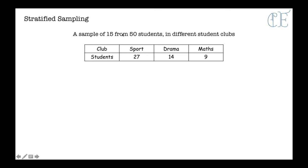So there are 50 students in total, it's telling us that here. And it's saying that I want a sample of 15. So first of all let's look at sport. I have 27 students out of a total of 50. I then need to times that by my sample size of 15, which gives me 8.1, so 8.